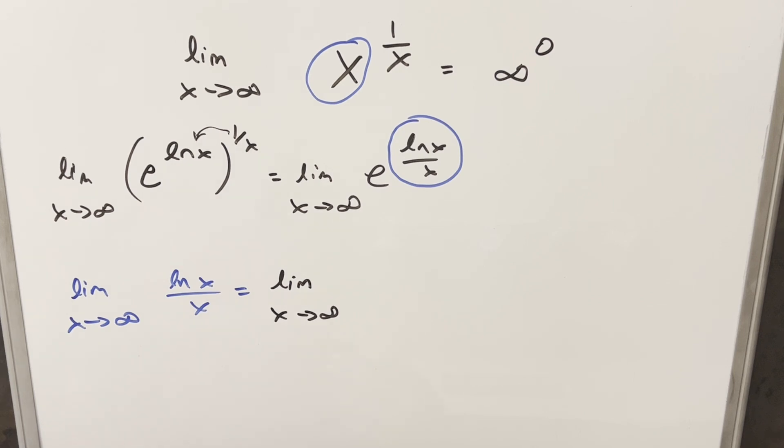Okay, so going ahead with L'Hopital's rule, what this allows me to do is instead of evaluating this limit, I can evaluate the limit of the derivative of the numerator over the derivative of the denominator. So taking the derivative of ln x first, we're going to have 1 over x. And then taking the derivative of x, this is just going to become 1.